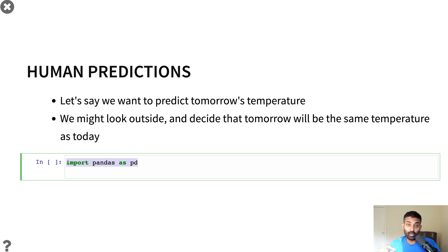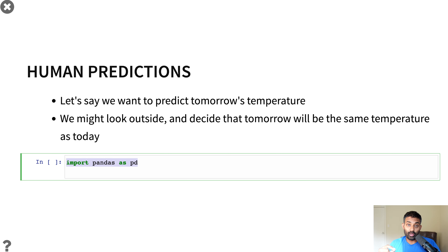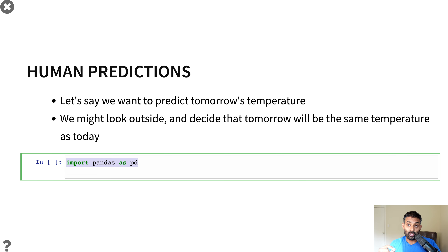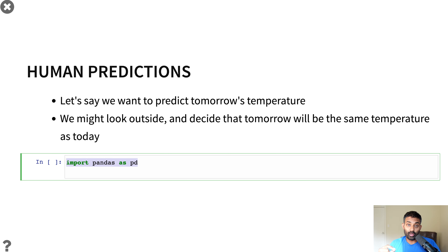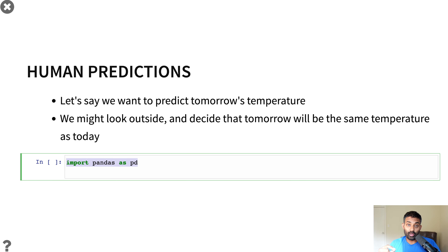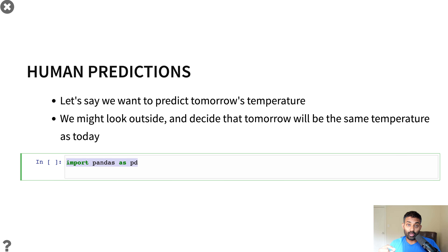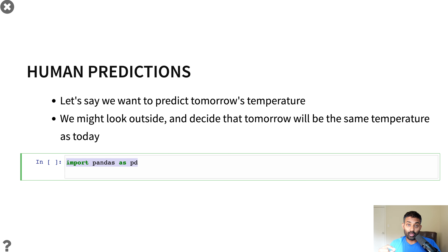Usually we want this error to be as low as possible, so we want to try to shrink it. To do that, we can use a technique called expert systems, which were very popular in the 1980s during a big AI wave. In expert systems, computers run human-generated rules to make predictions. For example, we might say tomorrow's temperature is the average of the past five days, and if today is more than five degrees warmer than yesterday, add two to tomorrow's temperature.